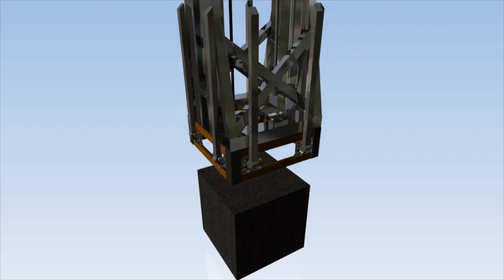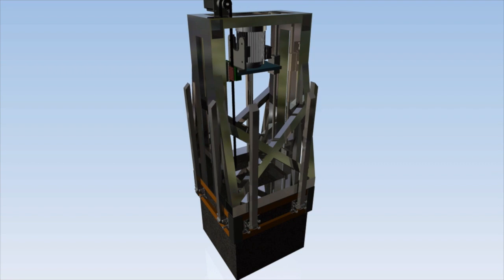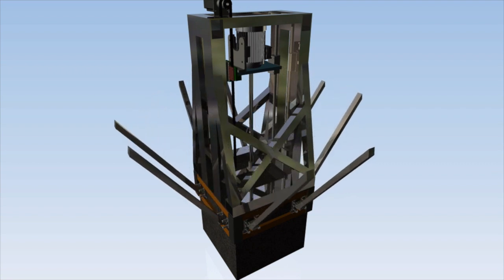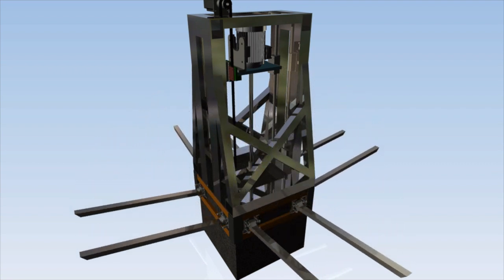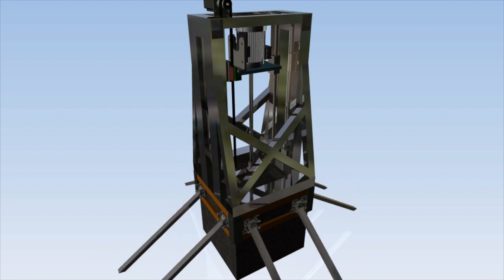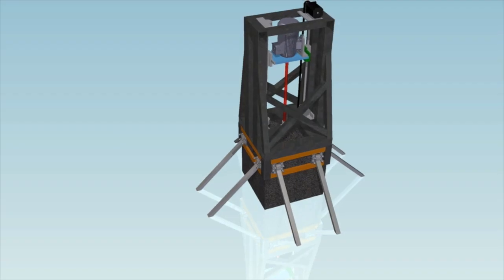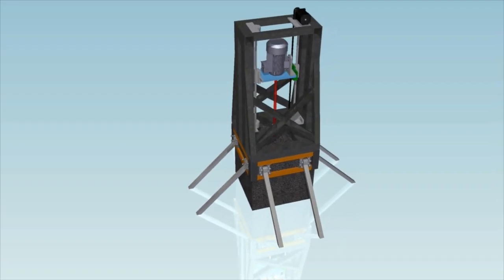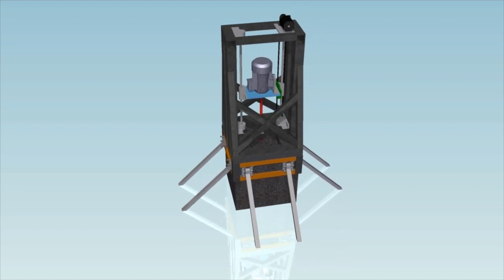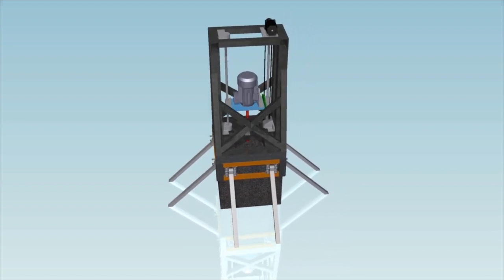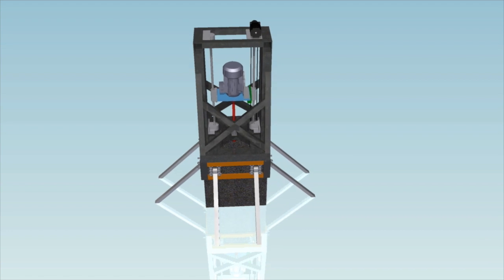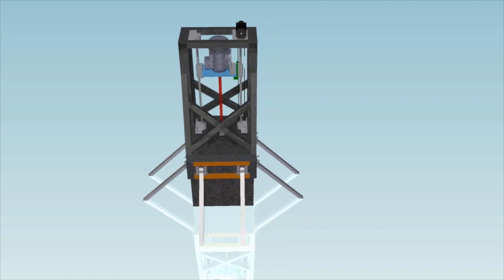Many components in the rig design are dual purpose. The outriggers both secure the rig to the sample and provide additional stability. The top drive motor acts as a rotary actuator while providing weight on bit. The VFD both controls the top drive as well as provides the necessary sensory output. And the concrete block acts both as a sample and as a stabilizing structure.